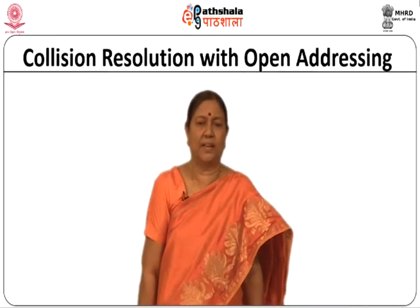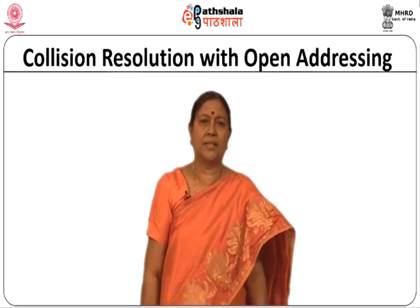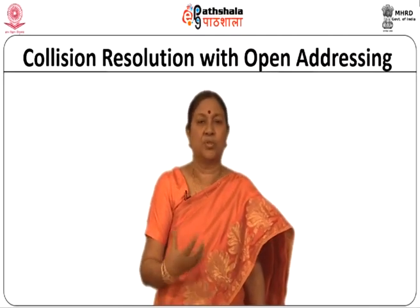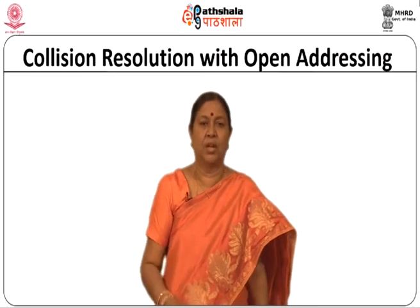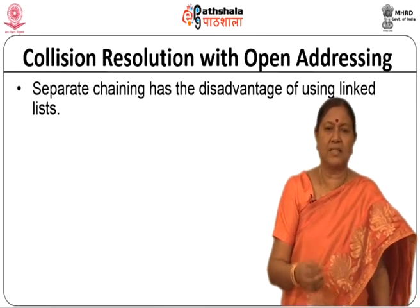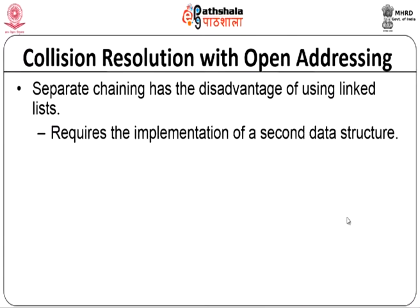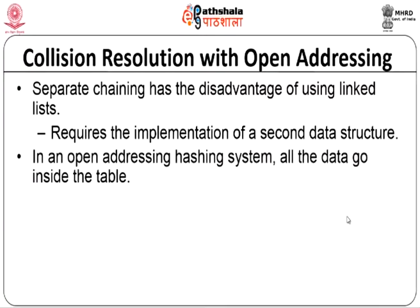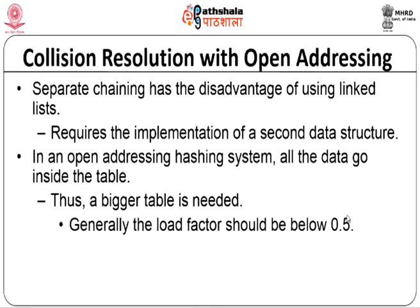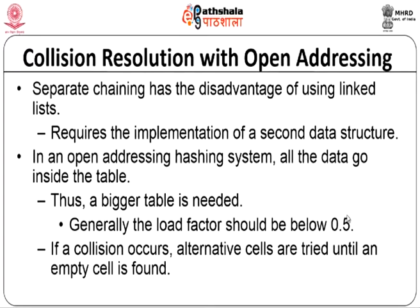Now let us talk about collision resolution with open addressing. Open addressing is the closed hashing method, where we use the hash table itself to store elements that have caused collisions. Separate chaining has the disadvantage of requiring a second data structure outside the hash table. In an open addressing system, all data goes into the hash table itself. The load factor should generally be less than 0.5, meaning the hash table must be larger. If a collision occurs, alternative cells will be tried until a free location is found.